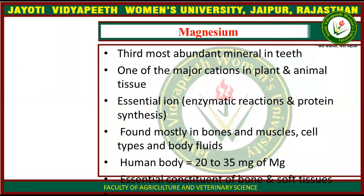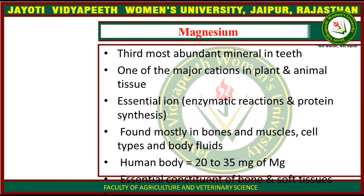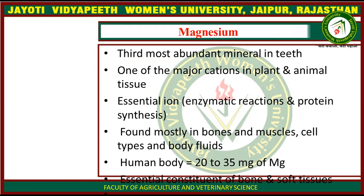Starting with the introduction, Magnesium is the third most abundant mineral in bones and teeth — after calcium and phosphorus. It is also one of the major cations, meaning positively charged ions, in plant and animal tissues.